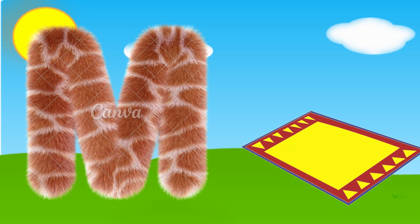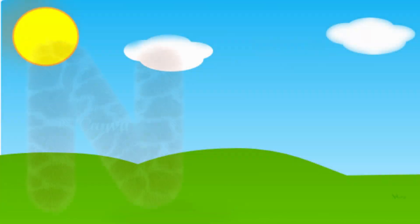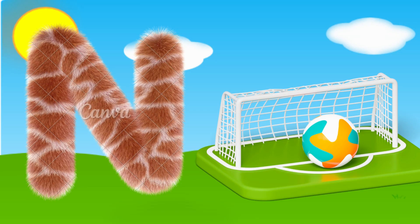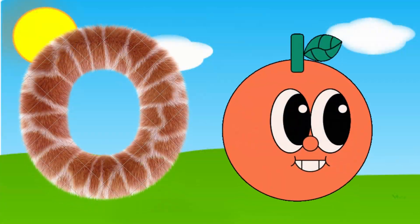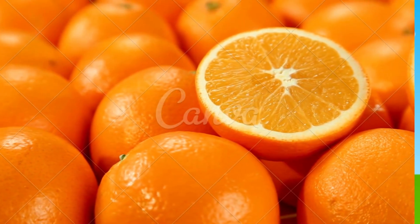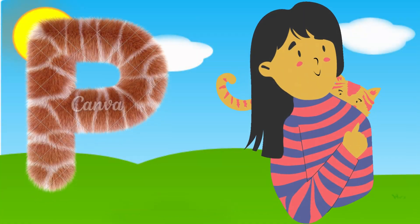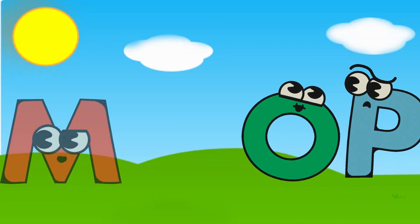M is for Mat, M-M-Mat. N is for Net, N-N-Net. O is for Orange, O-O-Orange. P is for Pet, P-P-Pet.